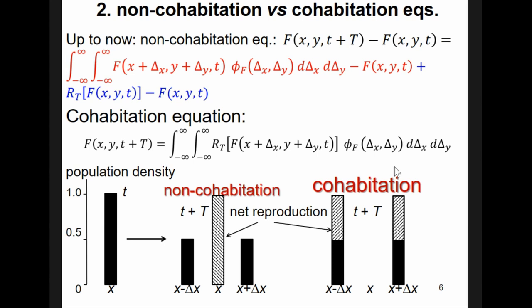This is just another improvement that has been proposed to this equation. This is the same equation as in the previous slide, and it is usually called non-cohabitation equation. In contrast, this equation, which is also used very often in the ecological literature, is called the cohabitation equation. What is the difference? Simply, that here we add up the effect of dispersal, which is shown in red, plus the effect of net reproduction, which is shown in blue.